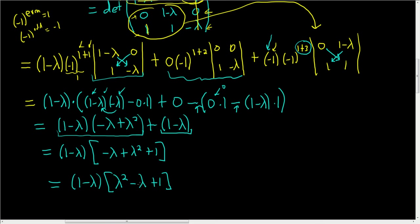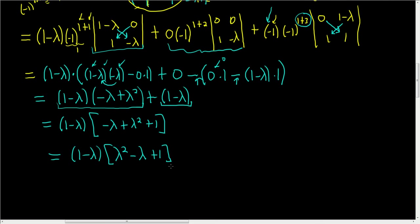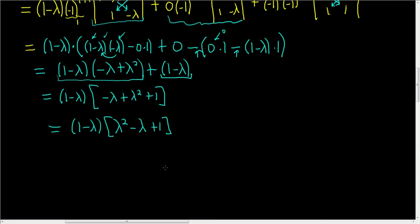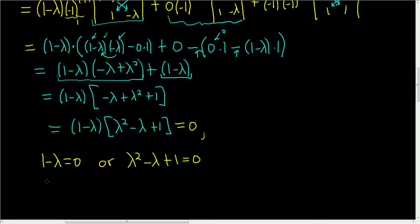This is the characteristic polynomial of A. To find the eigenvalues, we set it equal to 0. That gives us 1 minus λ = 0, so λ = 1, which is a real eigenvalue.